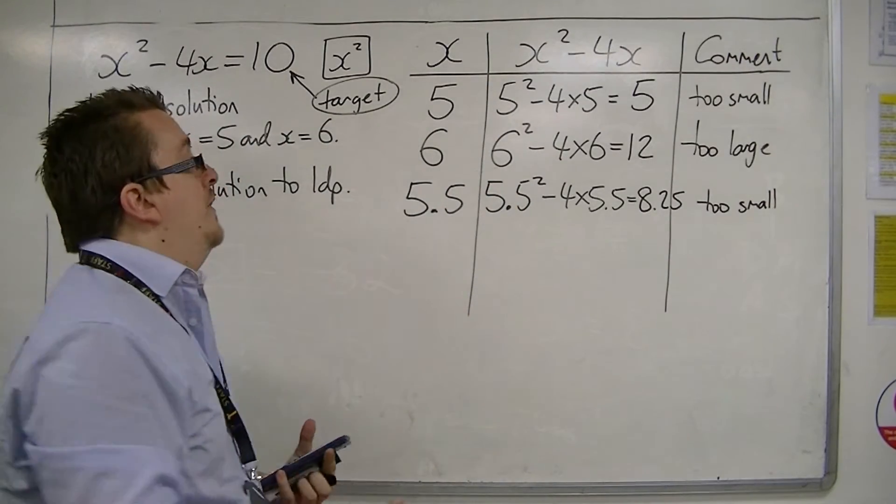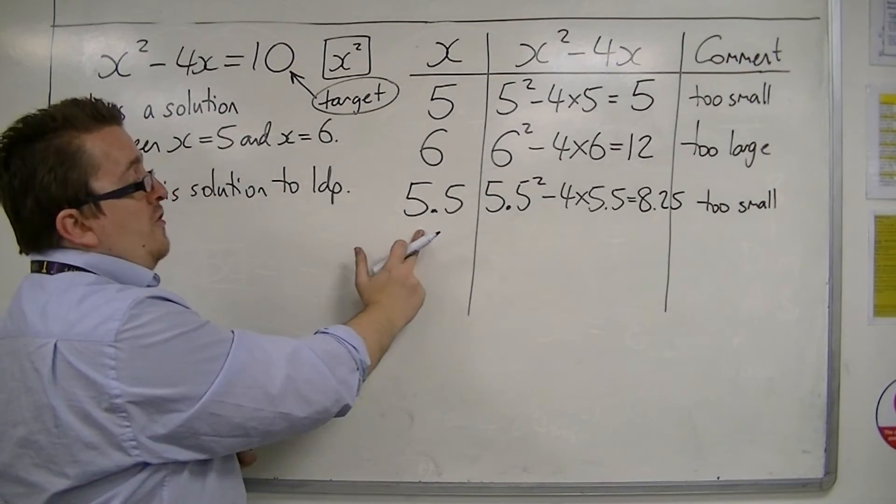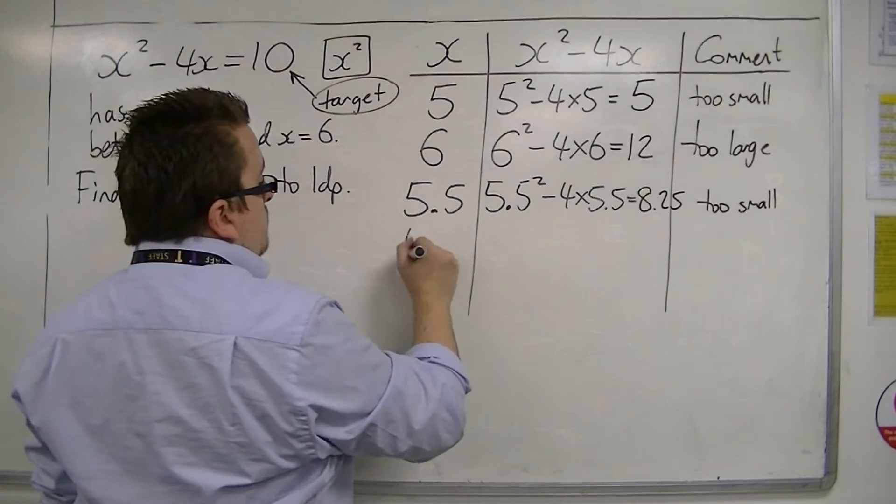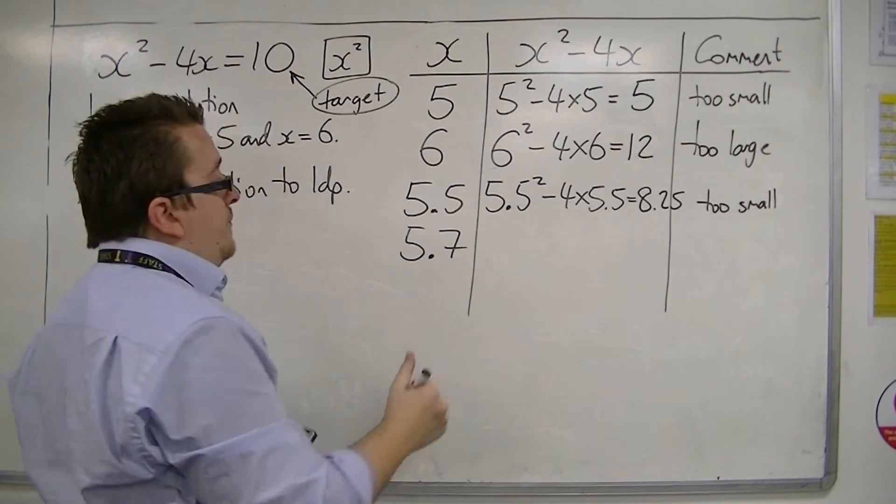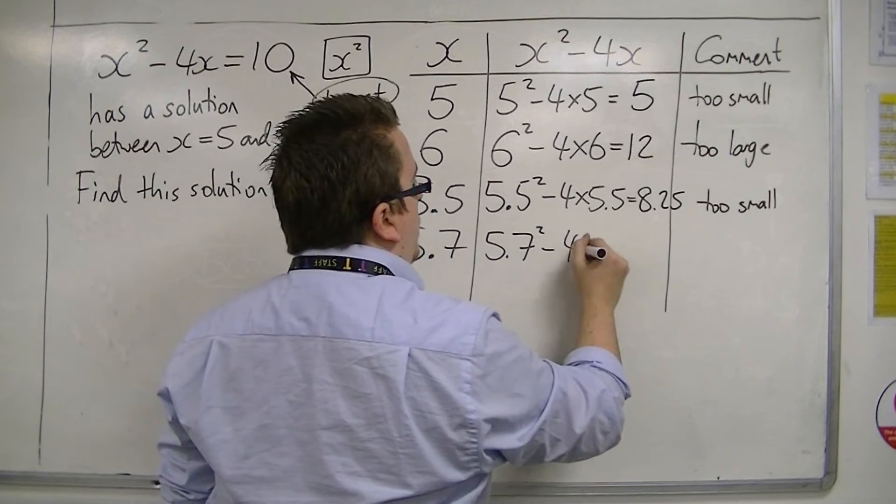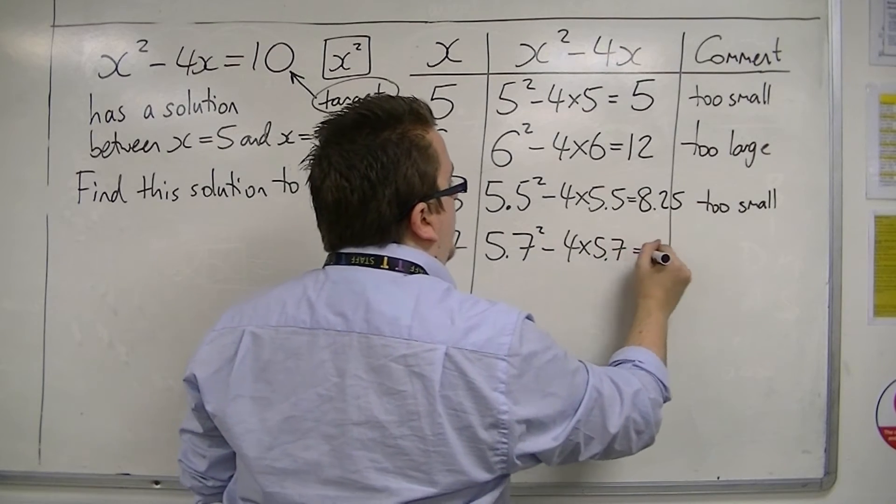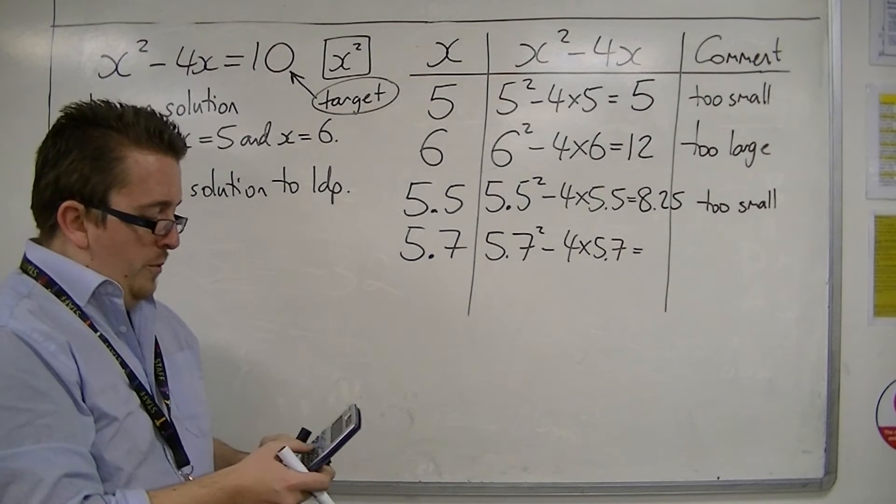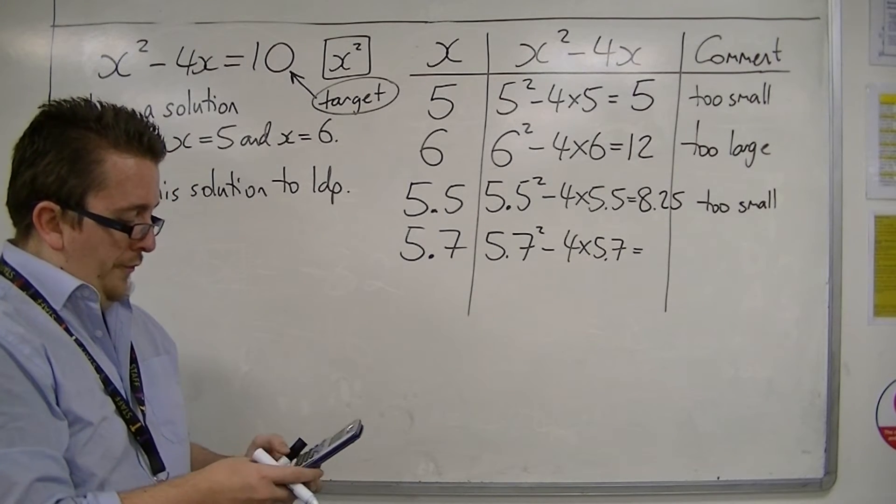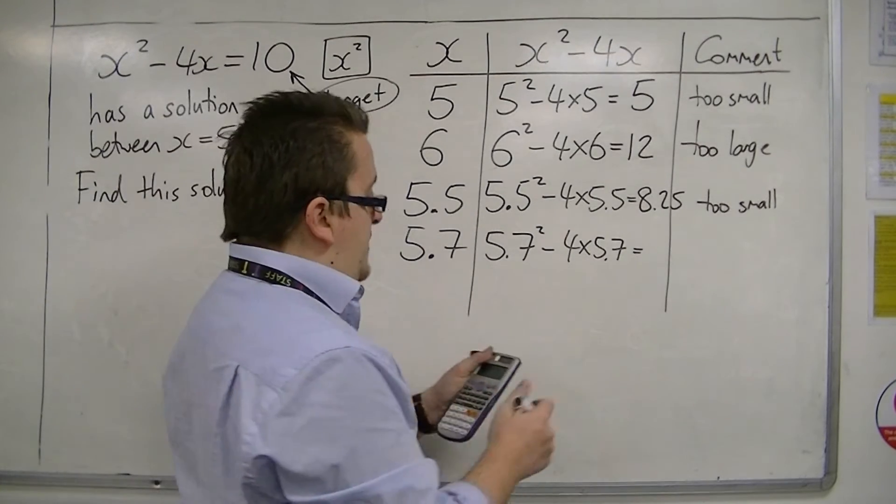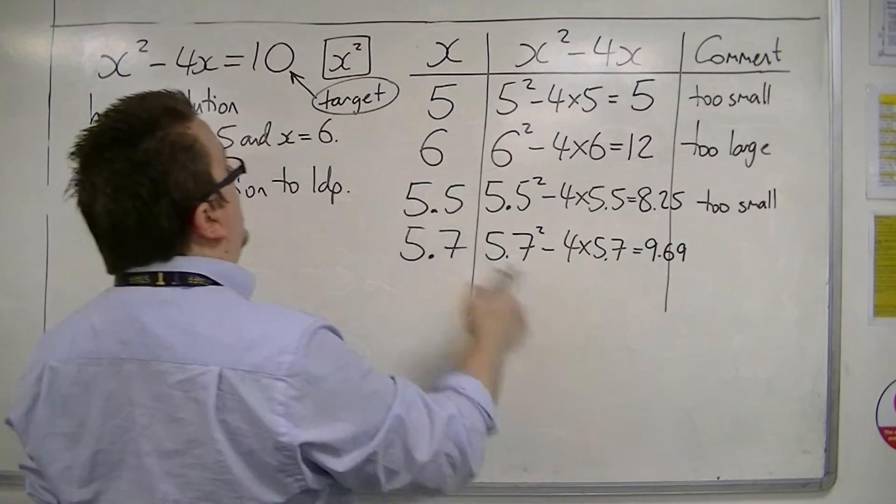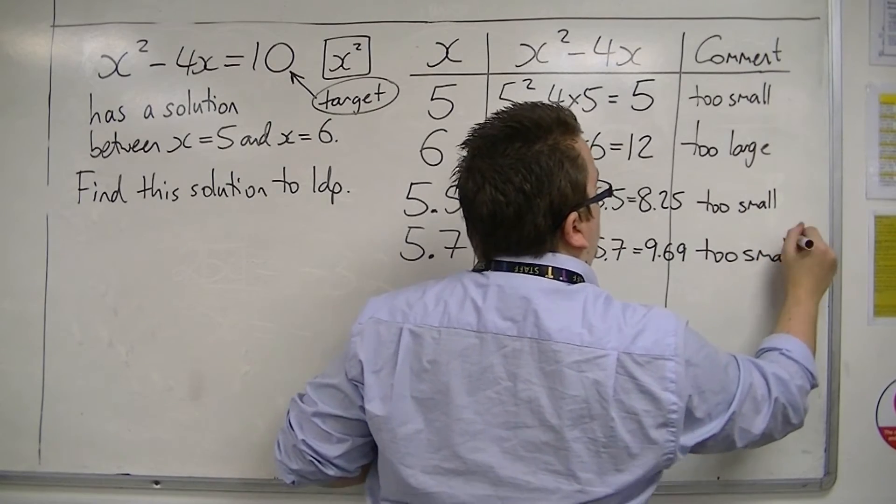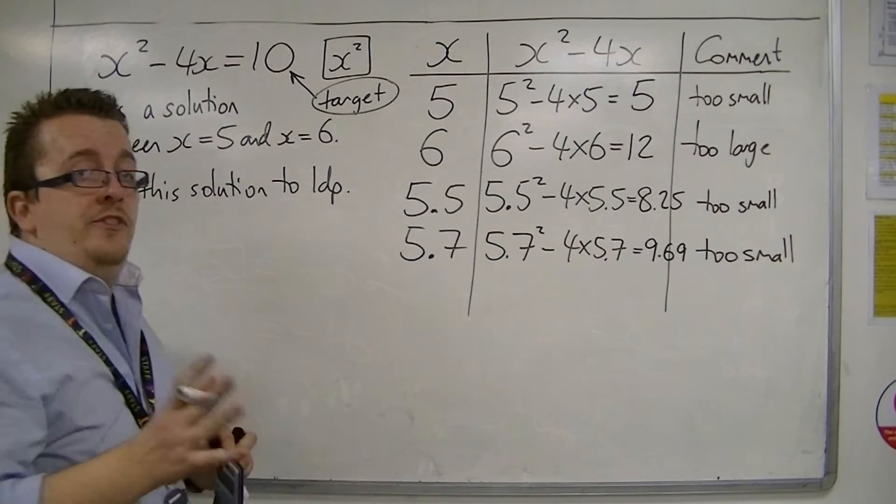So now we need to have a number that is larger than 5.5 but smaller than 6. So let's try 5.7. 5.7 squared, take away 4 lots of 5.7. So you can see, partly, the choice of value is up to you. 5.7 squared, take away 4 lots of 5.7, is 9.69. It's close, it's close to 10, but it's not close enough. It's too small.